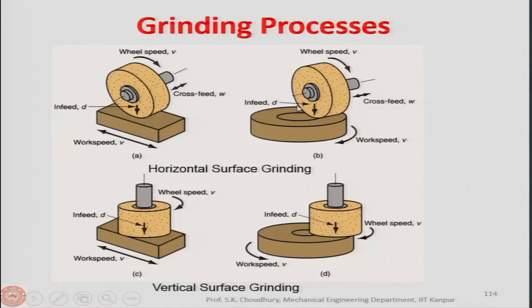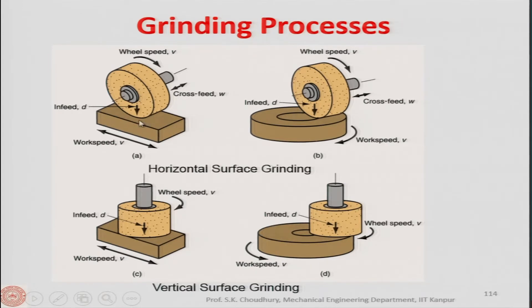In the case of a round-shaped workpiece, the wheel will still rotate and be given a cross-feed and in-feed, but the workpiece will be rotating rather than reciprocating. Here the workpiece is rotating about its axis, so the axis of the workpiece and the axis of the grinding wheel will be perpendicular to each other.